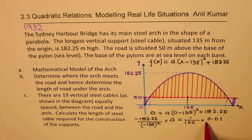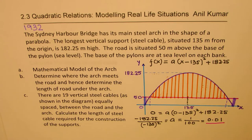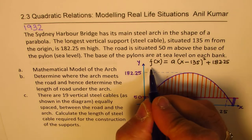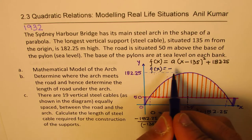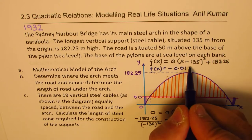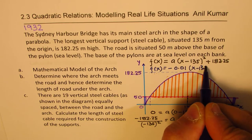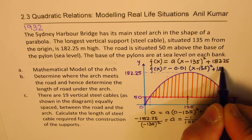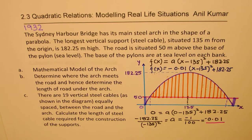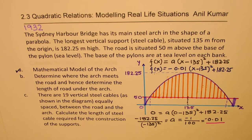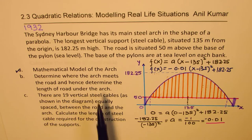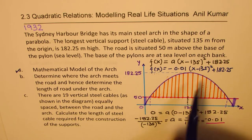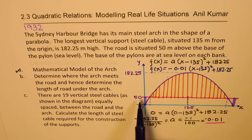That's a beautiful equation to work with. Rewriting, the equation is f(x) = −0.01(x − 135)² + 182.25. That is the mathematical model for Part A. The second part is to determine where the arc meets the road and hence find the length of the road.